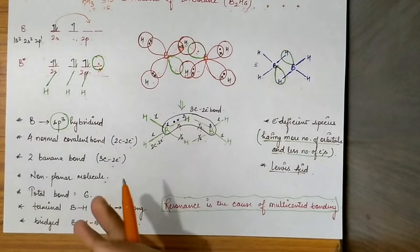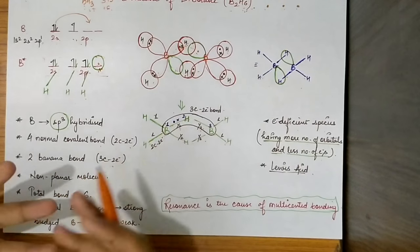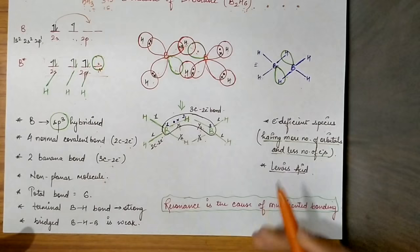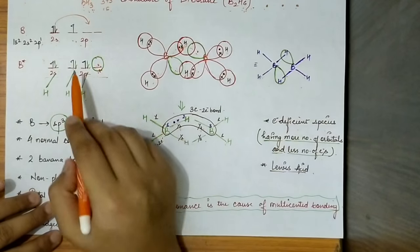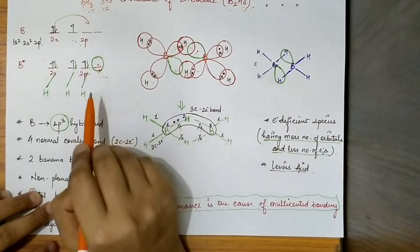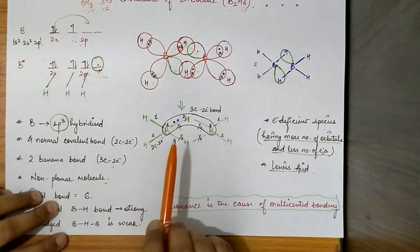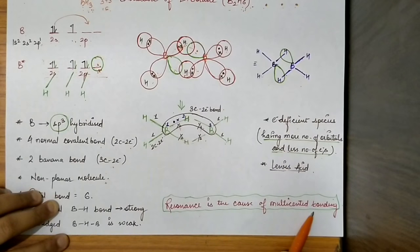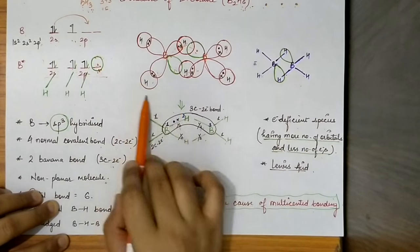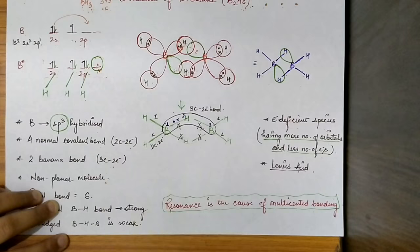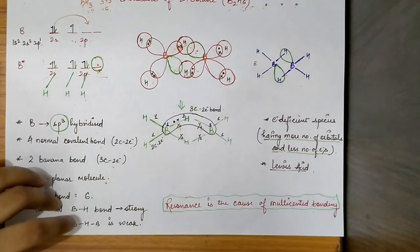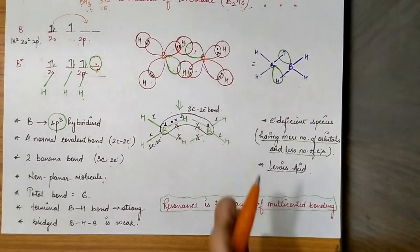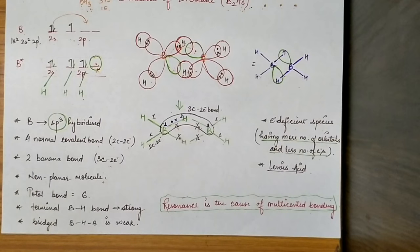Lewis acid means there is a deficiency of electrons and an orbital ready to accept electrons. So B2H6 is a Lewis acid. The main cause of multi-centered bonding is the resonance delocalization of electrons. B2H6 is an electron deficient molecule that shows multi-centered bonding.